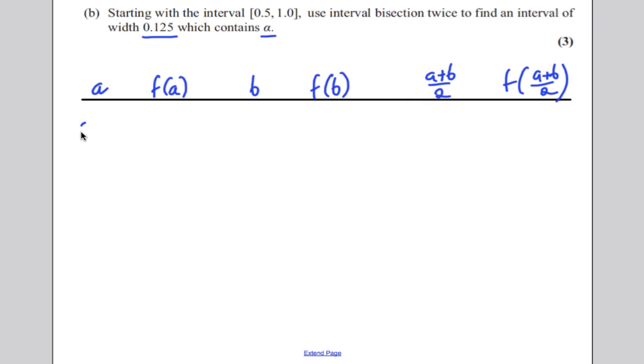Now a, we started off as 0.5, and we worked out that f of a was negative 0.4375, b was 1, and we worked out f of b ended up being 1. So let's work out a plus b over 2, so 0.5 plus 1 over 2, which would simply be 0.75. Then work out the function evaluated at x is 0.75, and you get yourself 0.066.